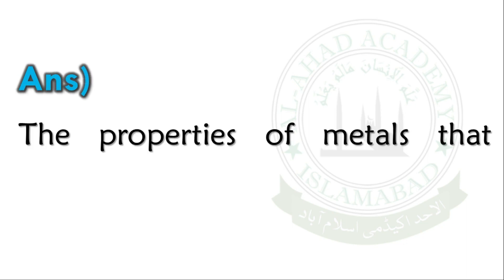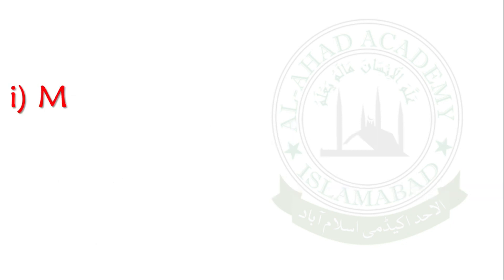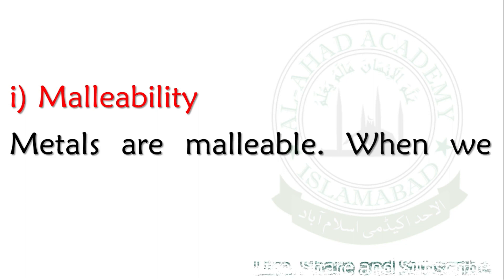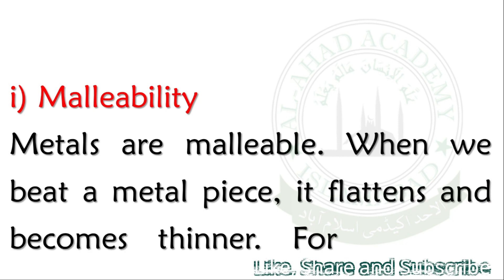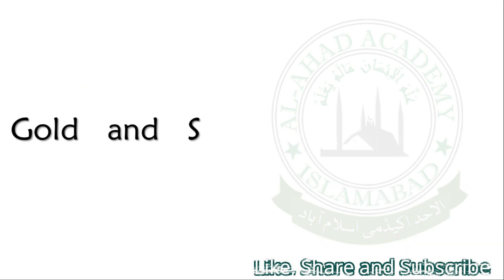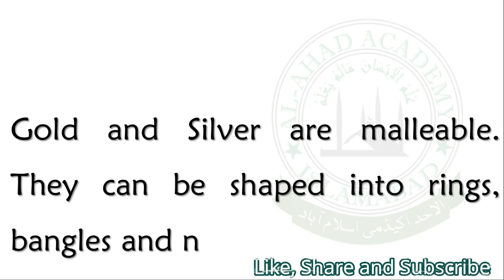The properties of metals that make them suitable for making many objects are: Malleability. Metals are malleable. When we beat a metal piece, it flattens and becomes thinner. For example, gold and silver are malleable. They can be shaped into rings, bangles, and necklaces easily.